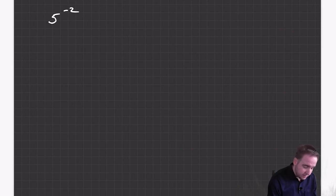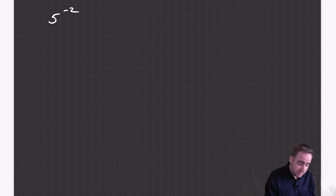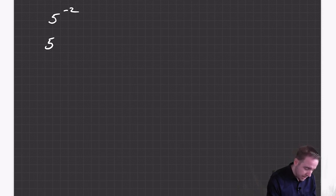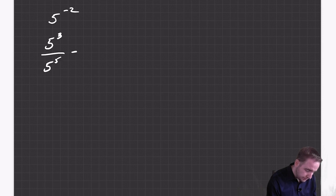What about the other one — five to the power of negative two? You can do the same sort of trick using the same rule. How about five to the power of three divided by five to the power of five? If I write this out the long way, that's three fives on top.